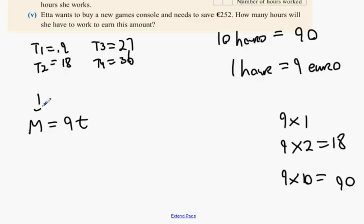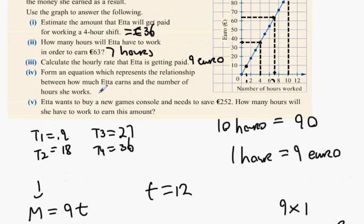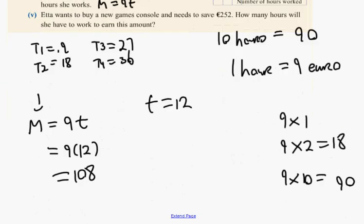Choose a letter. What does m represent? How much money you get. So if I say t equals twelve, how much money would you get for working twelve hours? 9 × 12 = 108. So that's your formula: m = 9t.